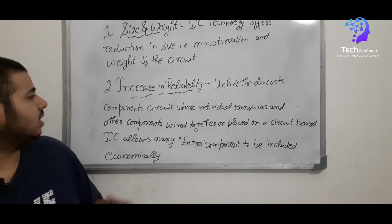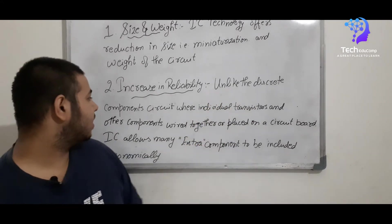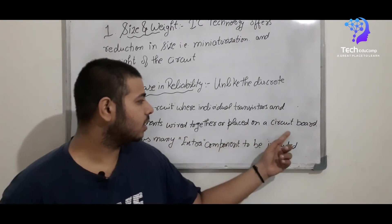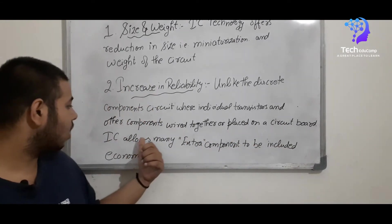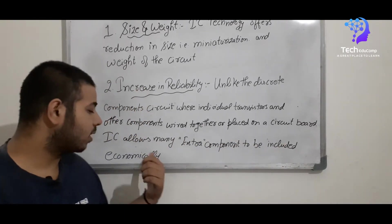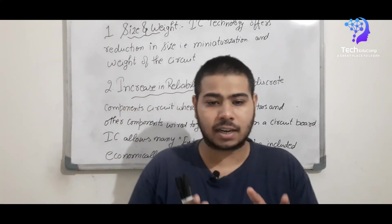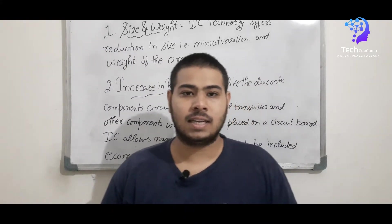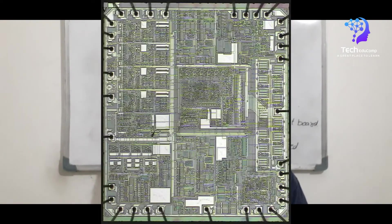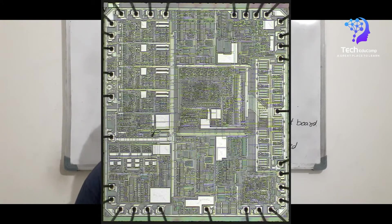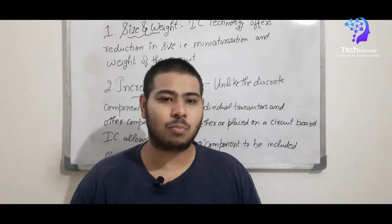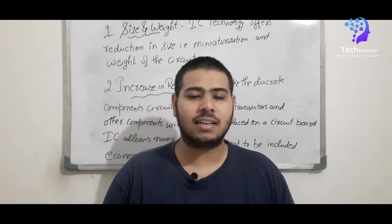Moving on, the second advantage is increasing reliability. Unlike discrete component circuits where individual registers and other components are wired together or placed on a circuit board, IECs allow many extra components to be included. What this means is that on a circuit board, if I place only transistors, only a limited number — like 10, 20 or 30 — but in IECs, the IEC is made up of billions of transistors. So this is an advantage of IECs: we can make an IEC using many million components, unlike discrete components.